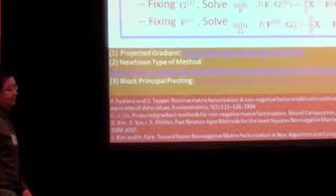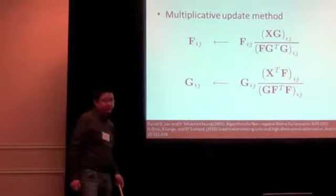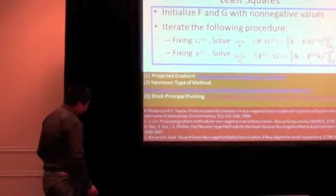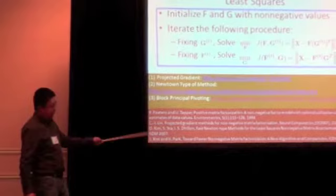The reason why people study this kind of approach is because one general observation of the multiplicative update rules is that it converges very slowly. So in order to speed up the convergence, people propose a lot of approaches under this category.